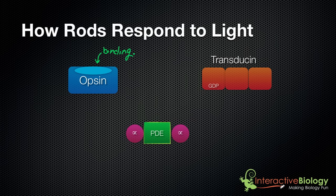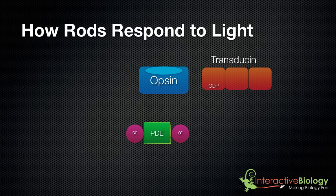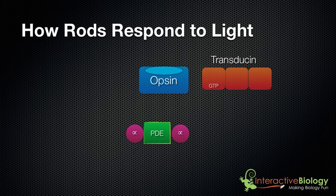What that does is expose a binding site on the opsin. So far we've freed up this binding site on the opsin. The next stage involves opsin going over to transducin, and since the binding site is exposed, it can catalyze a reaction. On one subunit of the transducin molecule, we have GDP. Once this active site is exposed, it catalyzes a reaction that converts that GDP into GTP — basically adding a phosphate group, changing diphosphate to triphosphate.